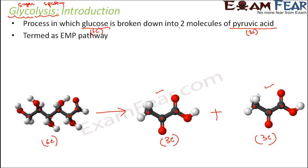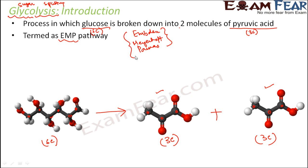Glycolysis is also known as the EMP pathway. EMP stands for Embden, Meyerhoff, and Parnas — the three scientists who together described this scheme of sugar splitting for the first time. After the initials of their names, it is known as the EMP pathway.